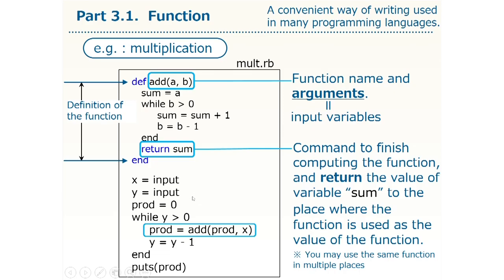For example, you can write add prod comma x in the arithmetic expression like this. This calls the function add and after its computation, the value of the function should be prod plus x, of course, if the function is correctly defined. It is passed here.